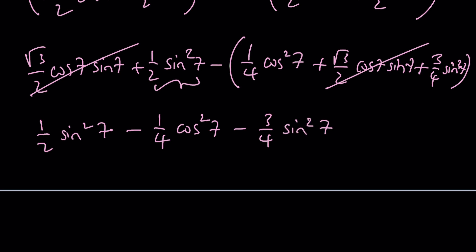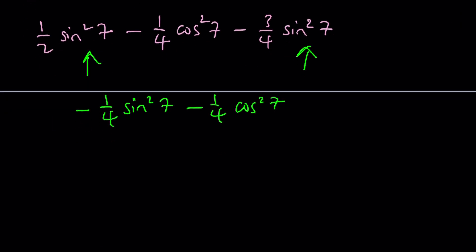Now, these two are like terms. So we can go ahead and combine them. 1 half is 2 fourths. That's negative 1 fourths sine squared 7 minus 1 fourths cosine squared 7. This may not make sense to you at the moment.